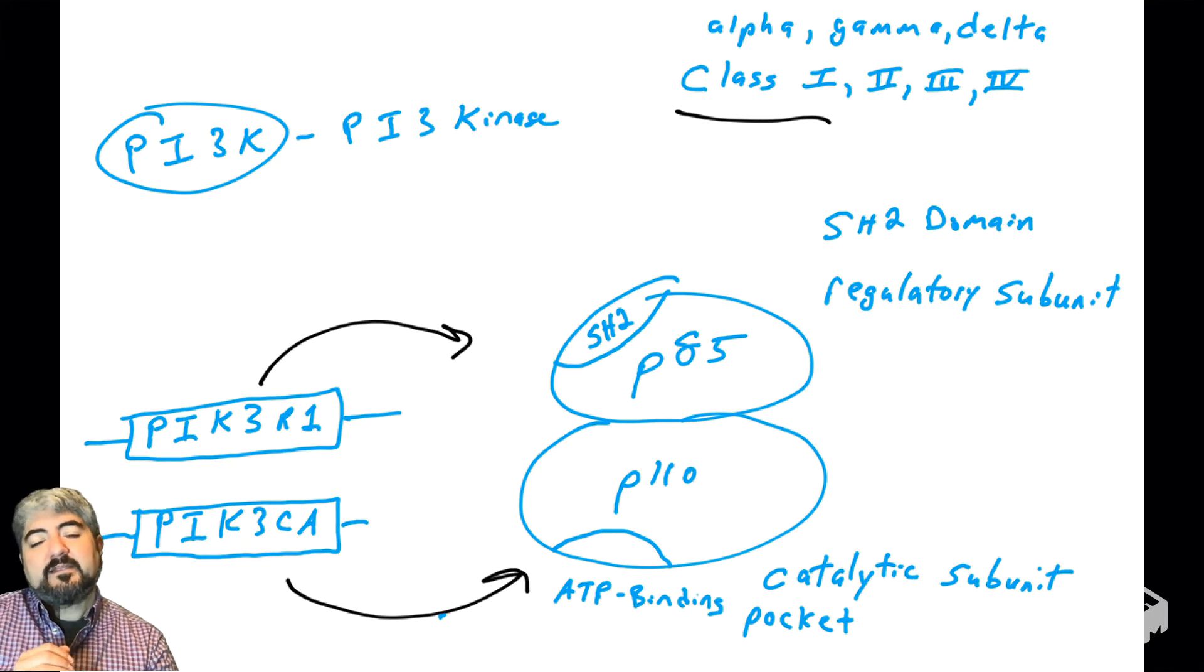The P110 subunit is the catalytic domain. This is a kinase—it must have the ATP binding pocket. One of the domains in P110 is the pocket that binds ATP that can remove the phosphate and transfer it over to its substrate, PIP2. There is a domain in the P85 protein called an SH2 domain. I made a whole video on SH2 domains. Hopefully you recall what an SH2 domain binds, what its function is.